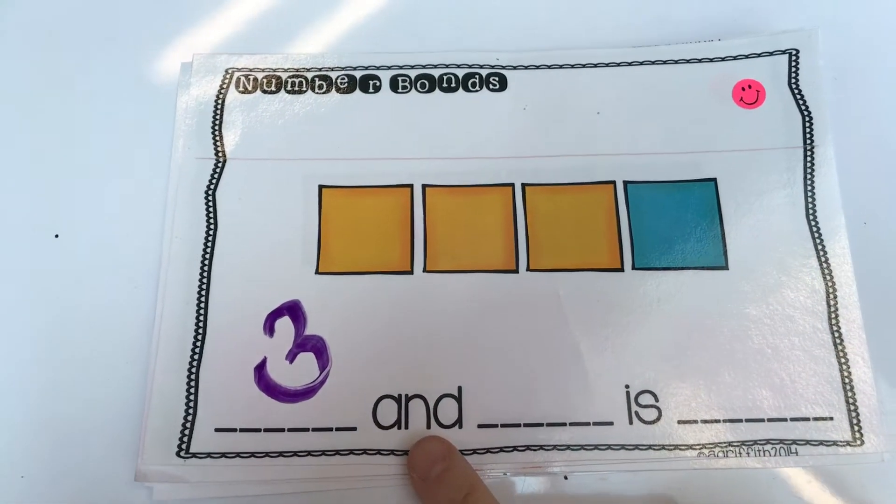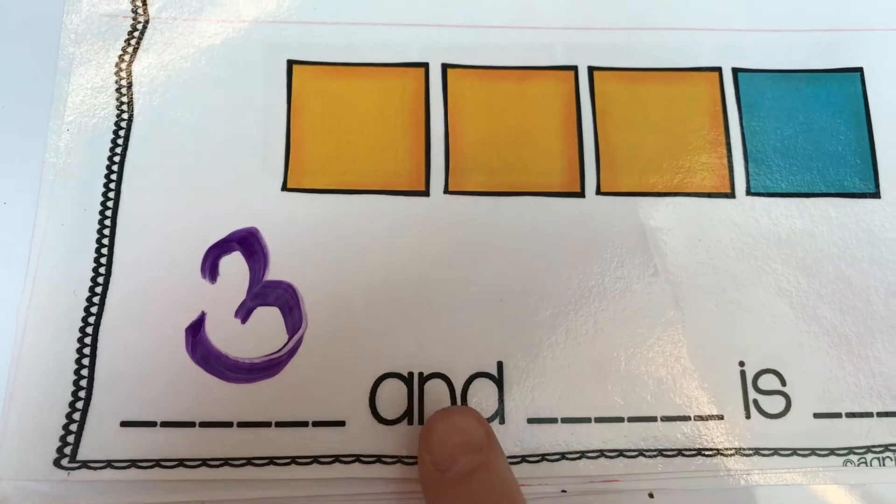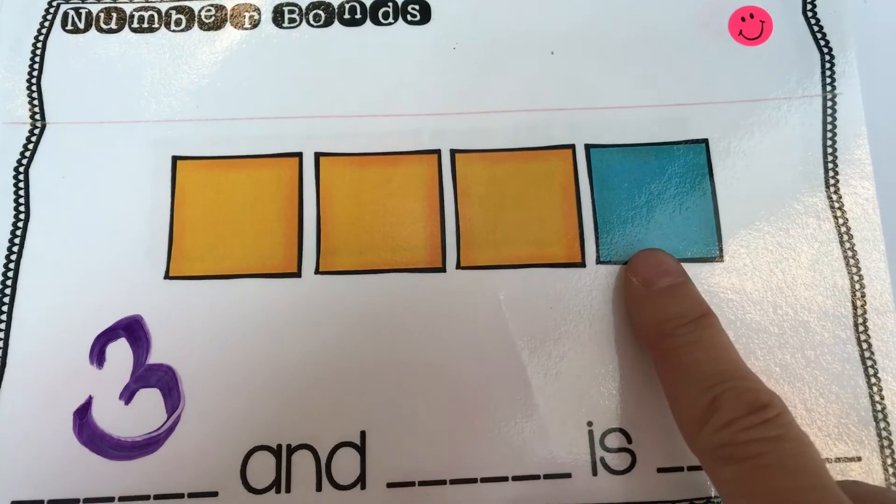Do you know this power word? That's the word and. So three and, and then there's a space. That's where the number for the blue squares is going to go.